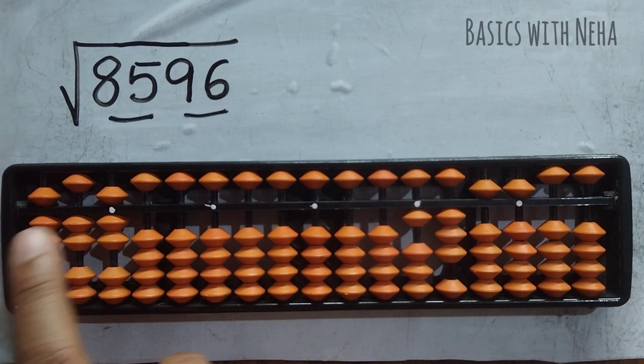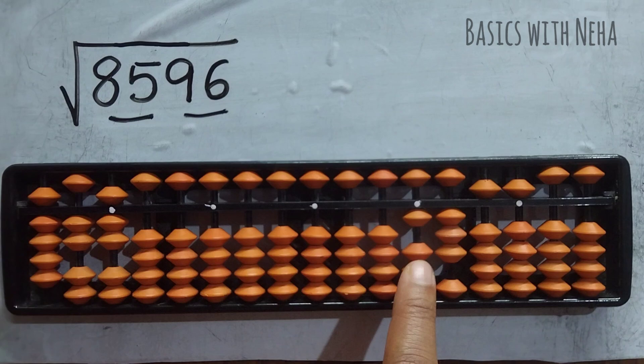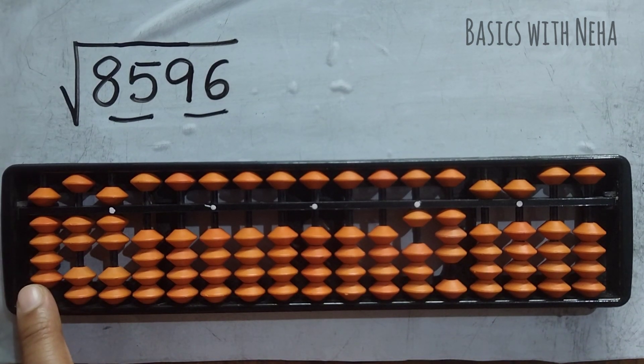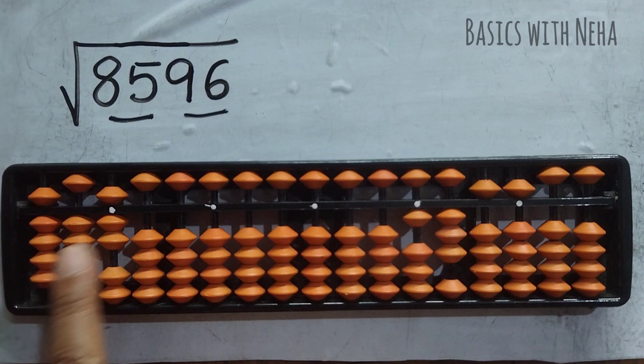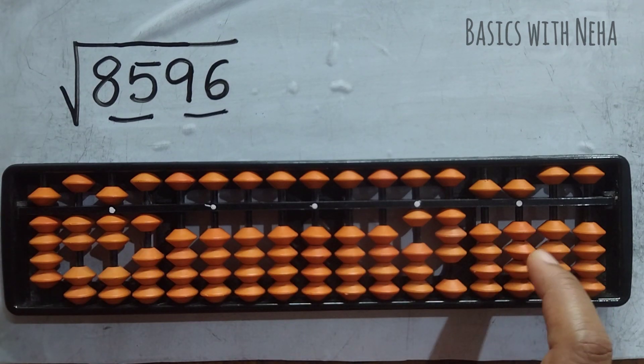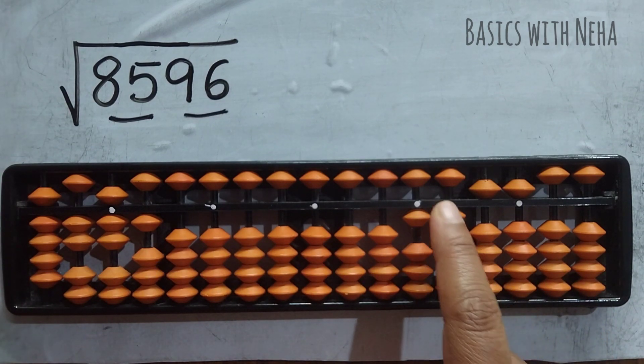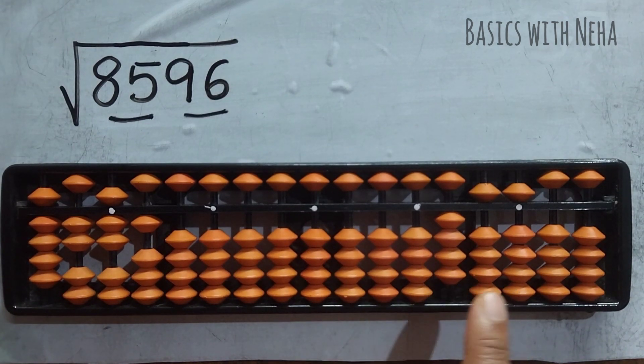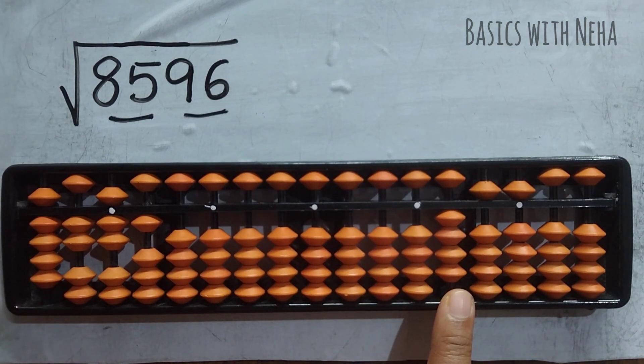Now the third step. This 9 when multiplied with something, I'm going to get 13 or less than that. 9, 2 squared is 18. So I'll go with 9, 1 squared is 9. So I have to minus 9 here. Minus 10 plus 1. And then I will continue.